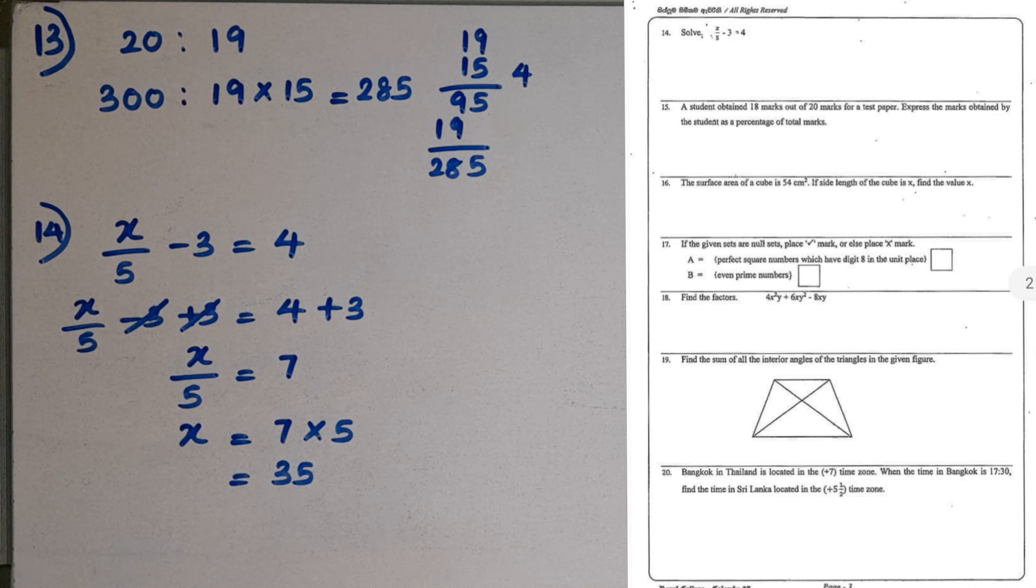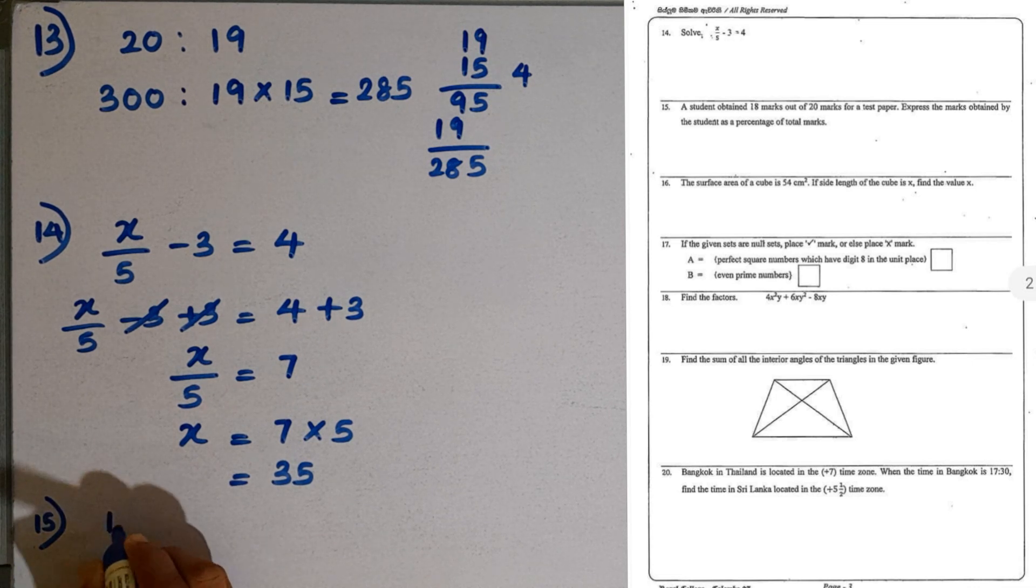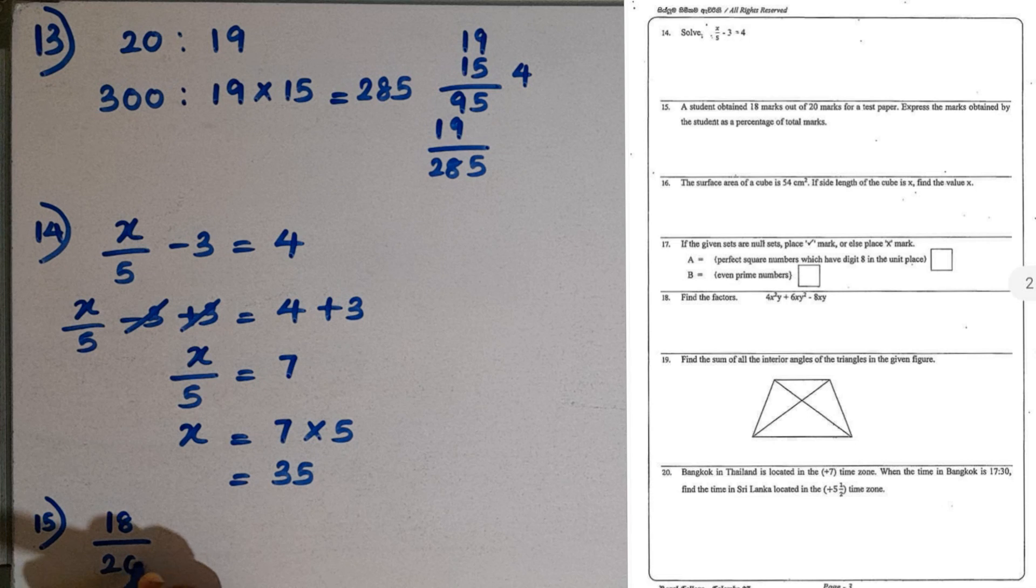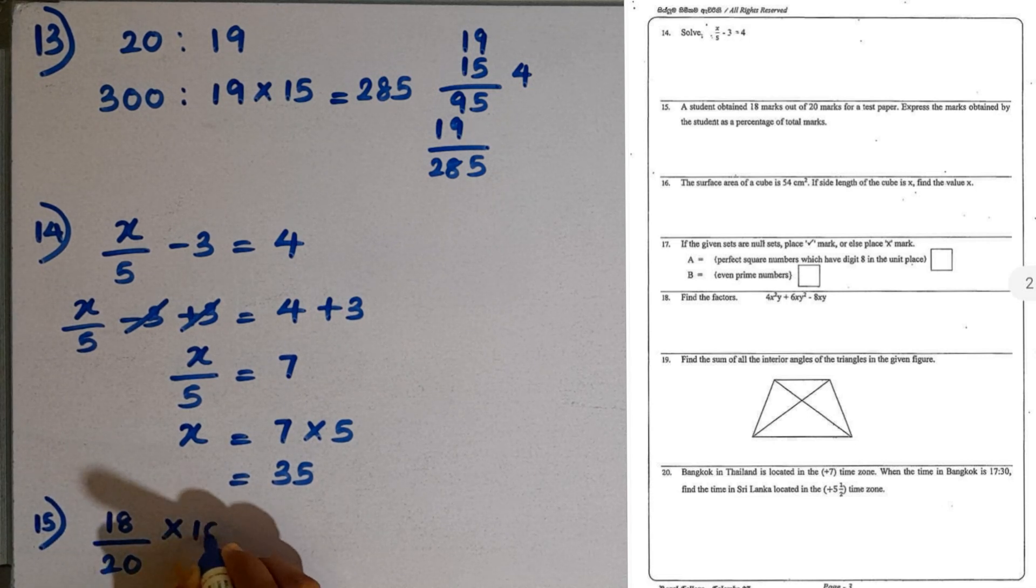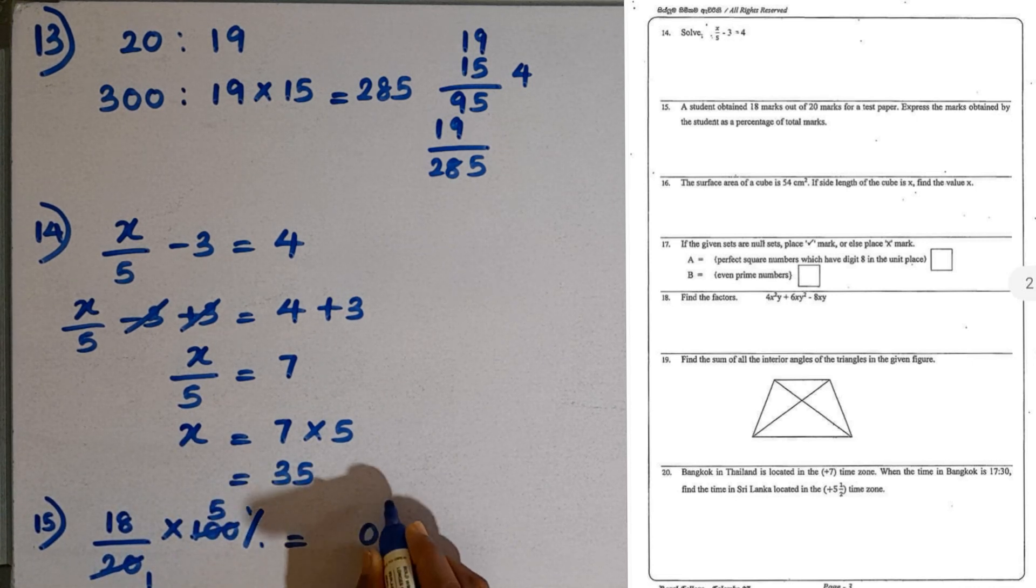Question number 15. A student obtained 18 marks out of 20 marks for a term test paper. Express the marks as a percentage. Write it as 18 over 20. To convert to percentage, multiply by 100%. 18 multiplied by 5 is 90. So 90% is the answer.